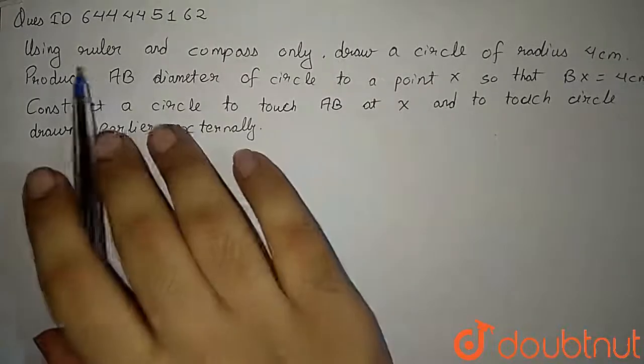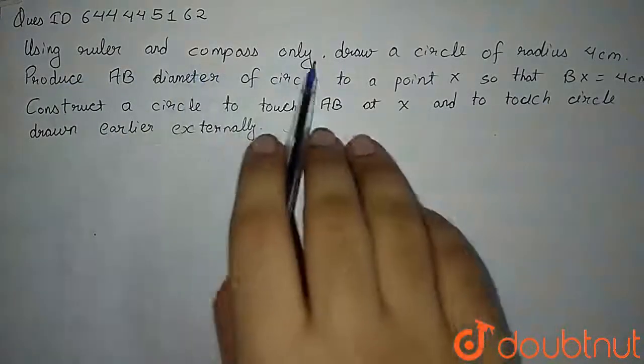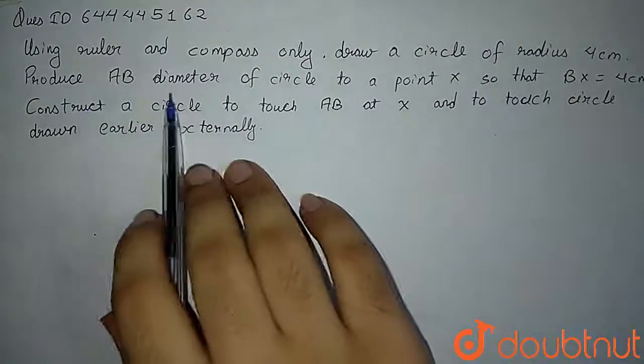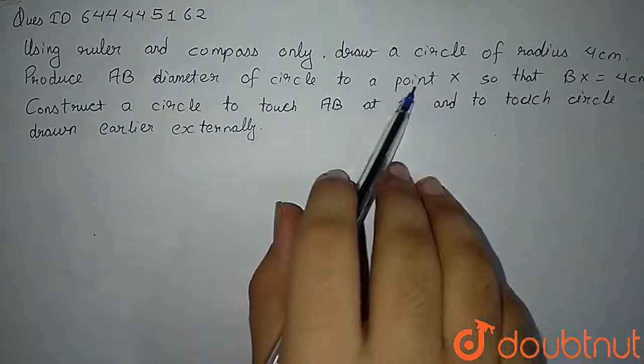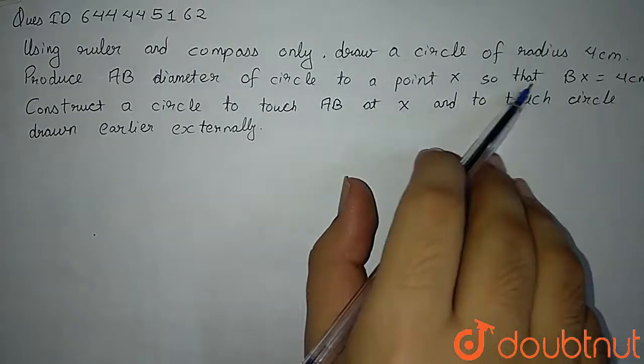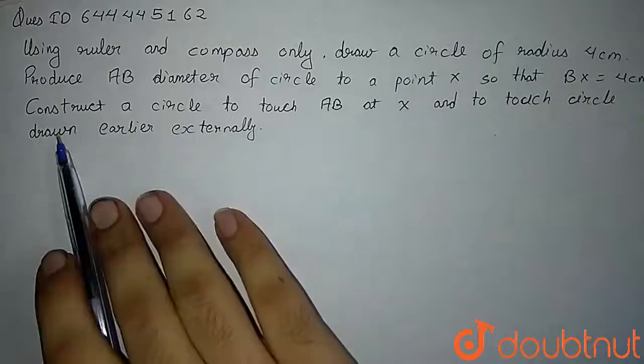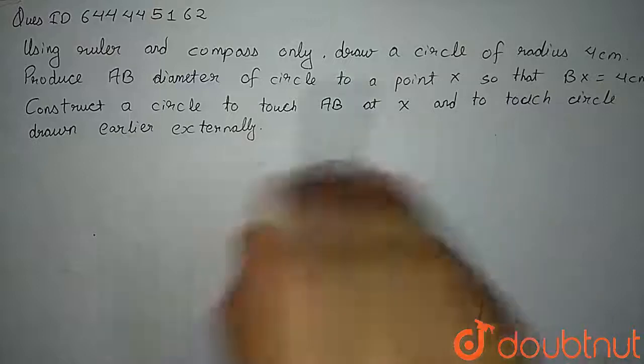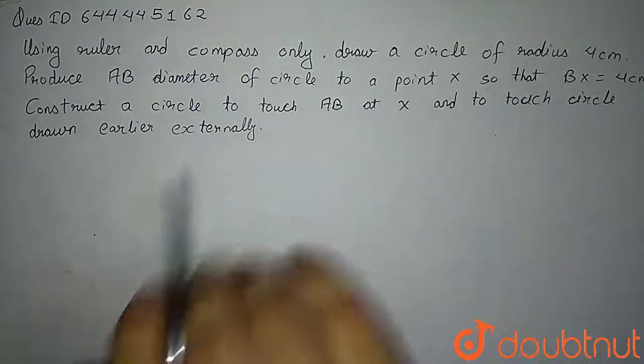So the question is using ruler and compass only draw a circle of radius 4 cm. Produce AB diameter of circle to a point X so that BX is equal to 4 cm. Construct a circle to touch AB at X and to touch circle drawn earlier externally.